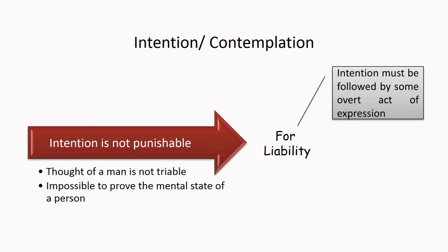The very first stage of crime commission is Intention. Intention is nothing but the thought involved in a person when he is prompted to act criminally. It is in fact the mental aspect involved in the crime commission. But there has not been any overt act and therefore there is no crime as such. It is the very first, very basic stage in the crime commission.